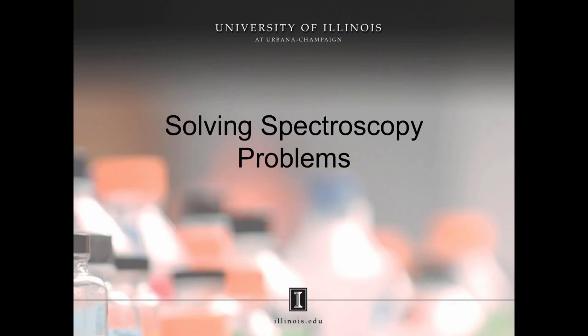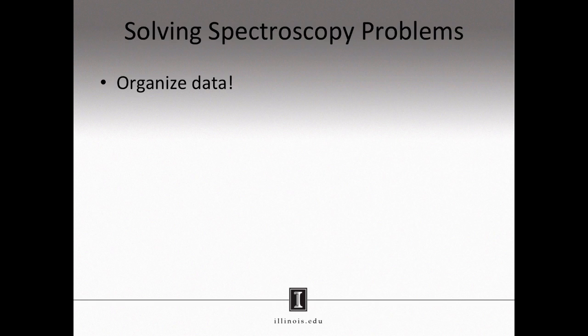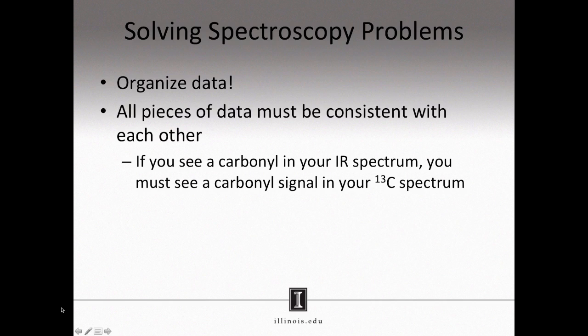Solving spectroscopy problems. This webcast will hopefully give you some insights into how to take different types of spectra and use that spectra to determine the structure of an unknown compound. You start by first organizing your data, which means making use of tables. You will be dealing with different types of spectra that give you different types of information. Being able to organize the data in a way that makes sense will be crucial to success. Once you have the data organized and you begin interpreting it, you must remember that each piece of your data must be consistent with all the other data at your disposal.